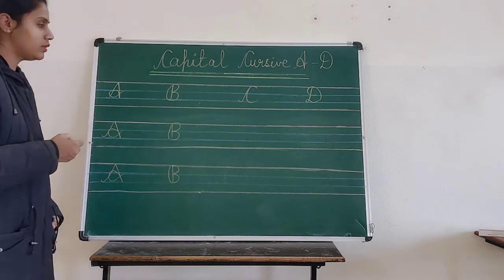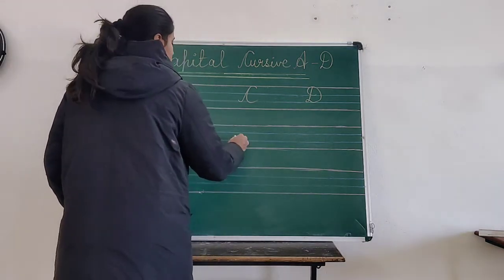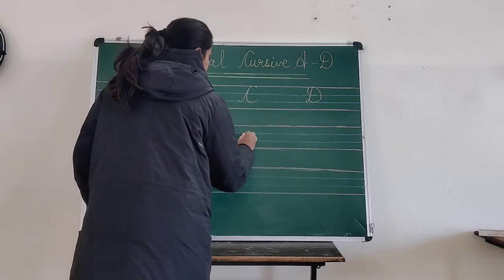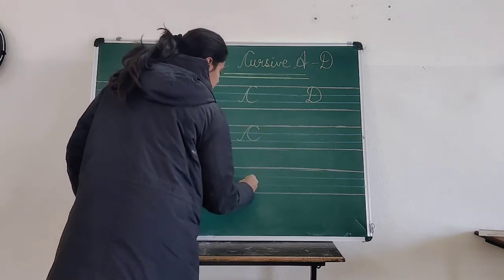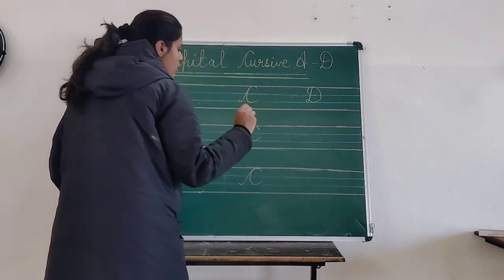Now C for cat. One small curve, and then make one slanted line, and then go down. Slanted line, and then go down.